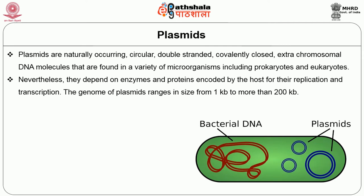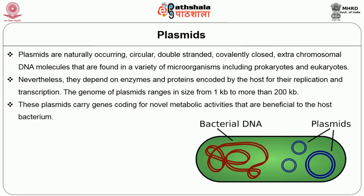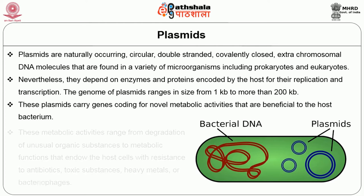Plasmids depend on enzymes and proteins encoded by the host for their replication and transcription. The genome of plasmids ranges in size from 1 kb to more than 200 kb. These plasmids carry genes coding for normal metabolic activities beneficial to the host bacteria, ranging from degradation of unusual organic substances to functions that endow the host cells with resistance to antibiotics, toxic substances, heavy metals, or bacteriophages.